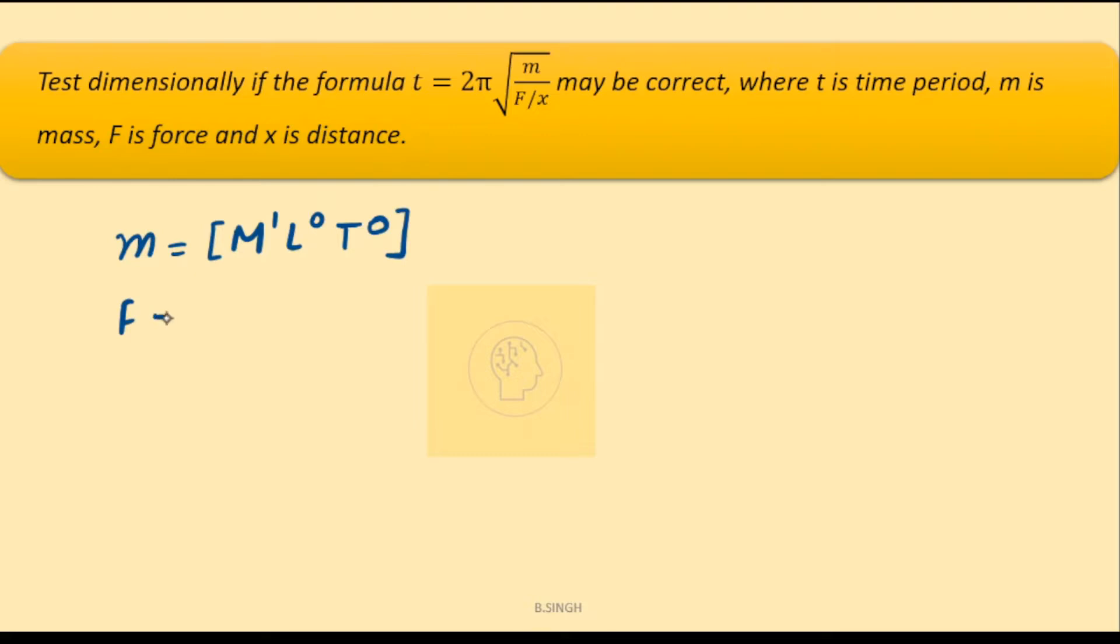Dimensions of force we know it is m1, l1, t minus 2. Dimensions of distance x equals m0, l1, t0.